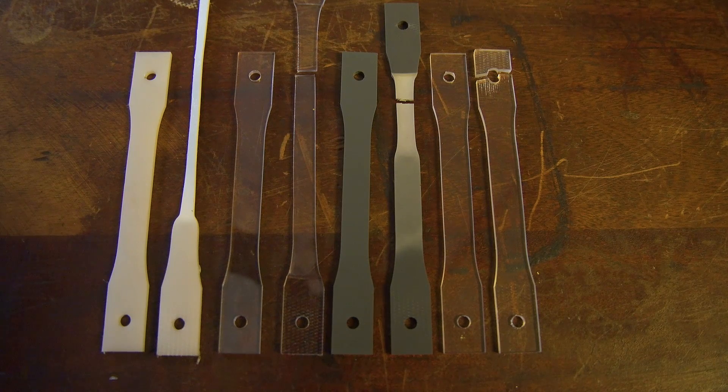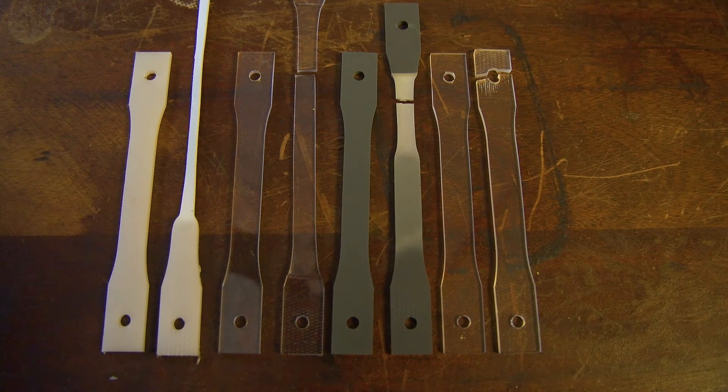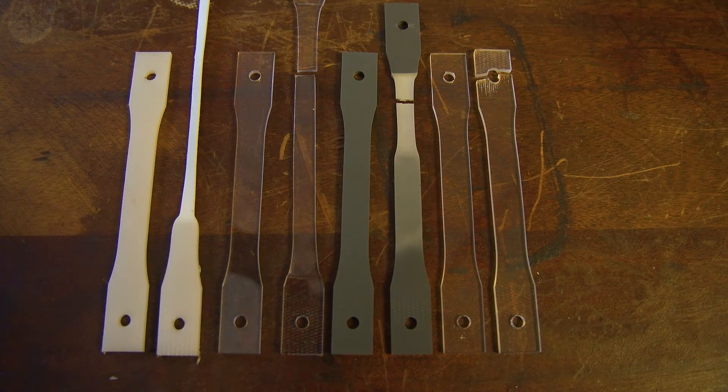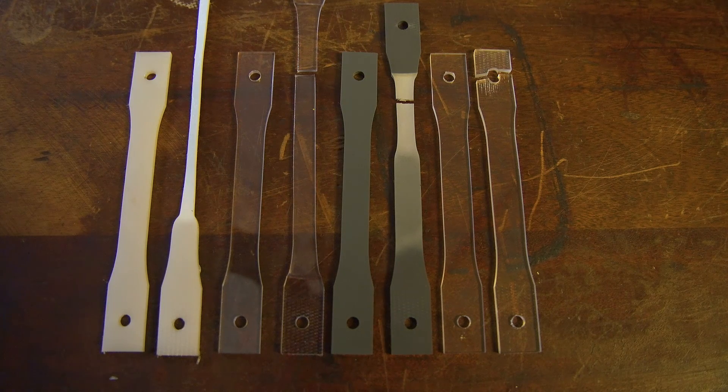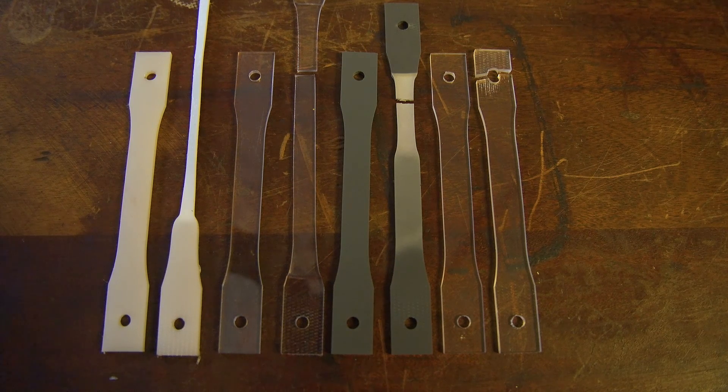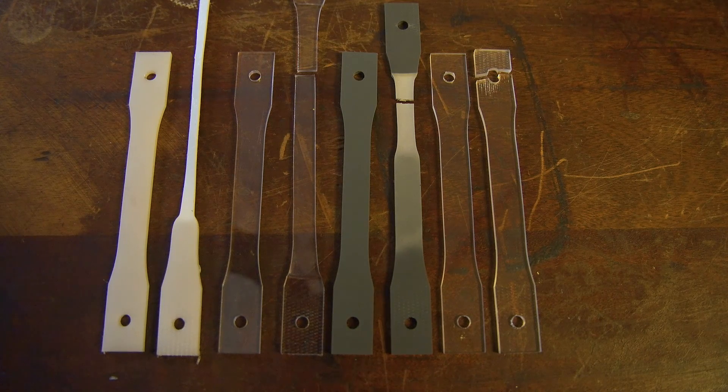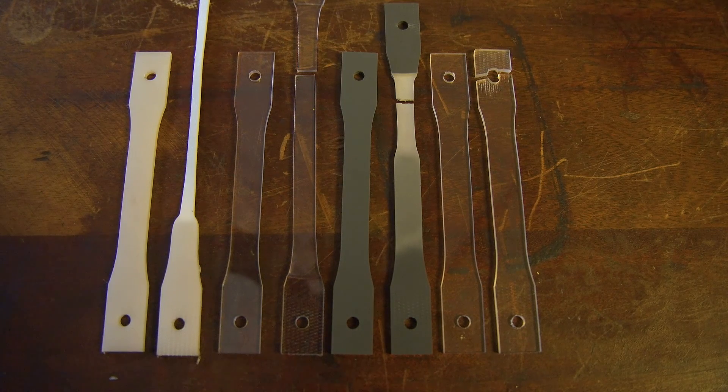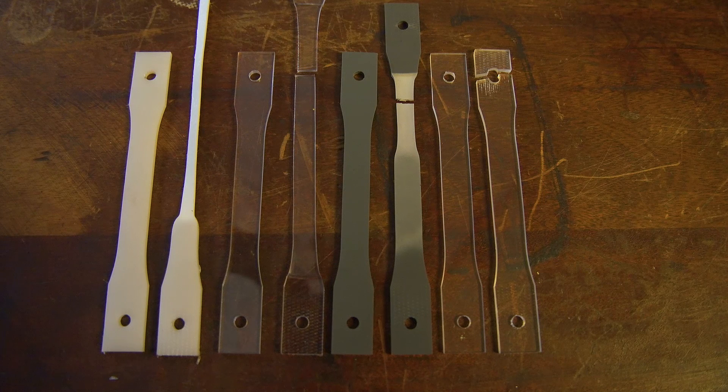And lastly, we've got the HDPE sample, which exhibited a significant amount of plastic deformation, so much so that we couldn't actually break it in our test because we didn't have enough crosshead displacement. And that is one of the reasons why we make milk bottles out of HDPE, because it can be blow molded and stretched to such an extent.